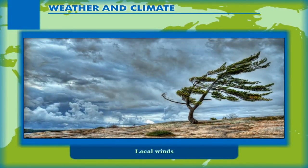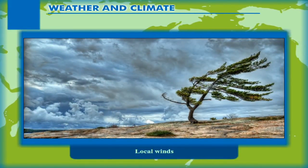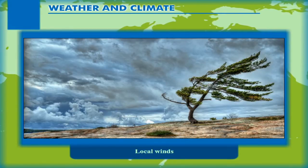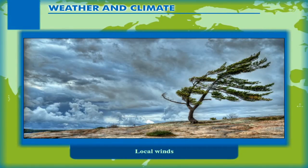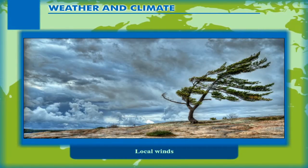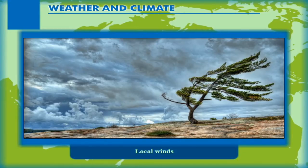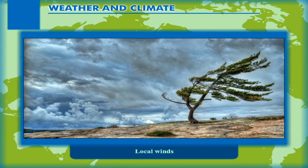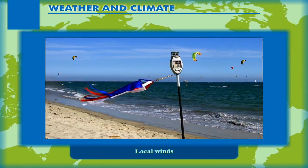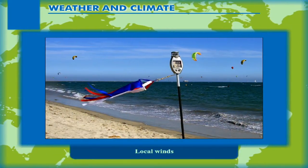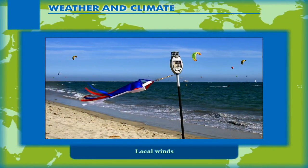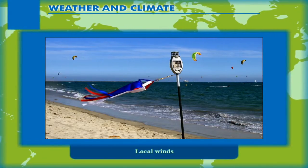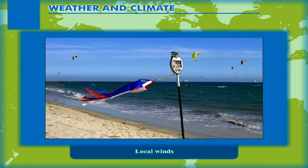Local winds are winds that arise due to local or regional changes in temperature and pressure. They affect small areas over shorter periods of time. Some local winds like monsoons, land and sea breezes are periodic. They are also called seasonal winds.